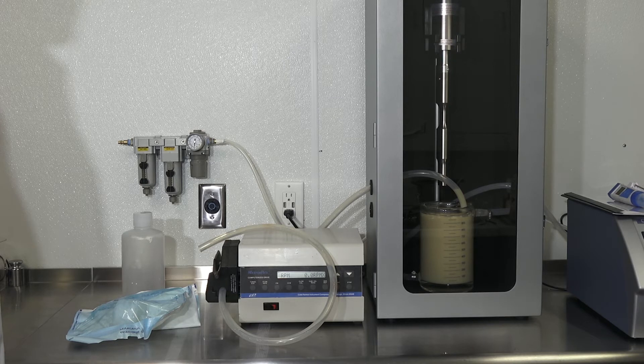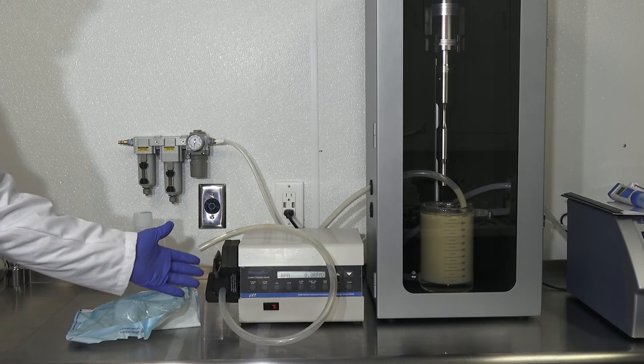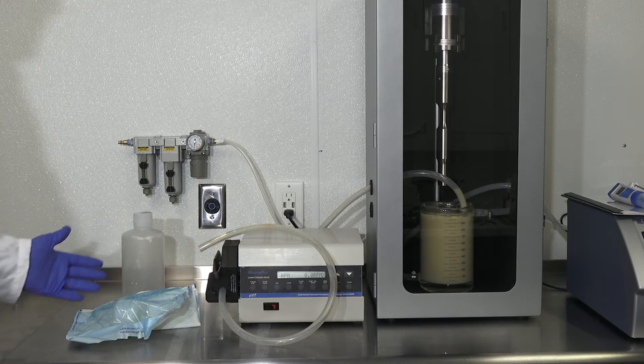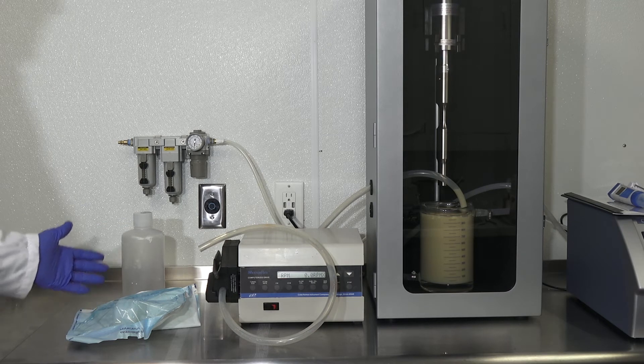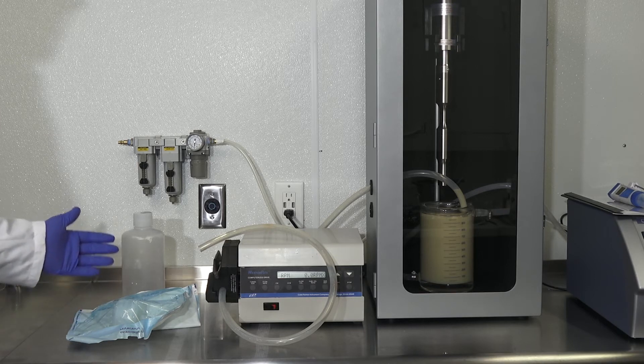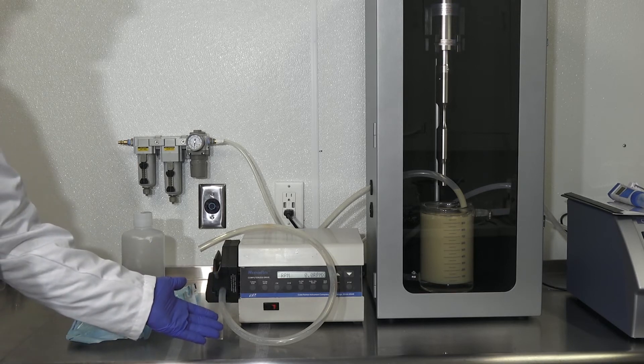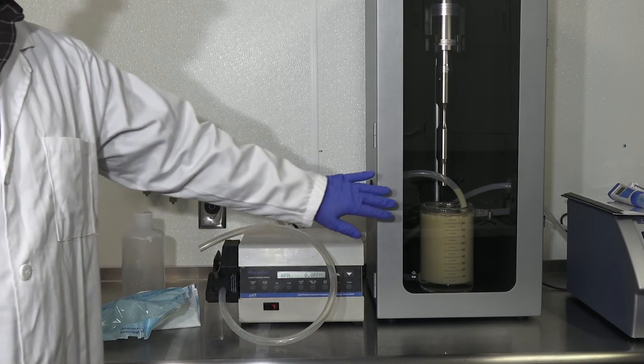Filtration is the final step. Here we have a peristaltic pump, a capsule filter, and a polypropylene bottle. We have autoclaved the capsule filter and the polypropylene bottle to ensure sterility. The peristaltic pump is feeding from the jacketed beaker.